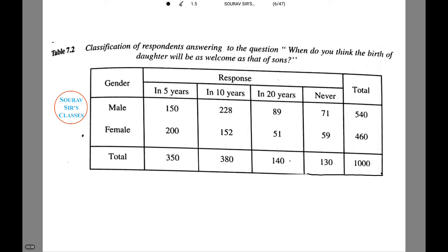This is what the table will be. At the top we have gender: male and female, and the time categories: five years, ten years, twenty years, and never. The totals are 540 males and 460 females as we had calculated. The female values are 200, 152, 51, and 57 respectively as we calculated. The rest of the values are obtained accordingly.